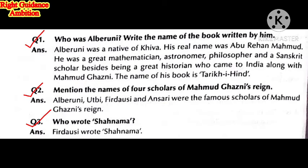Who was Al-Biruni? He was a great mathematician, astronomer, philosopher, and Sanskrit scholar, as well as a great historian, who came to India along with Mahmood Ghazni. The name of his book — important for the exam — is Tarikh-ul-Hind. Name four scholars of Mahmood Ghazni's court: Al-Biruni, Utbi, Firdausi, and Ansari.